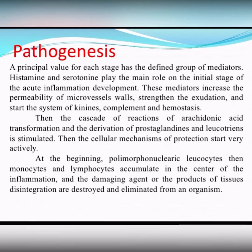Then the cascade of reactions of arachidonic acid transformation and the derivation of prostaglandins and leukotrienes is stimulated. After that, the cellular mechanism of protection starts very actively. At the beginning, polymorphonuclear leukocytes, then monocytes, and lymphocytes accumulate in the center of inflammation. The damaging agent or the products of tissue disintegration are destroyed and eliminated from the organism.